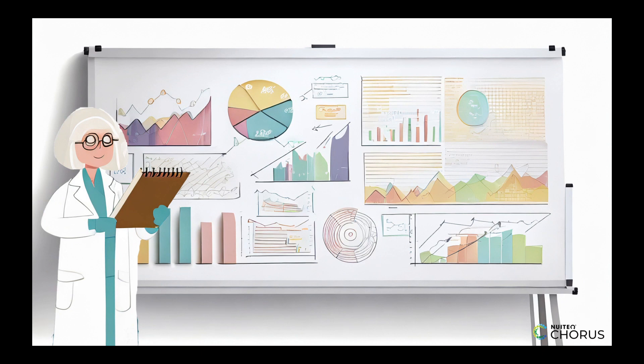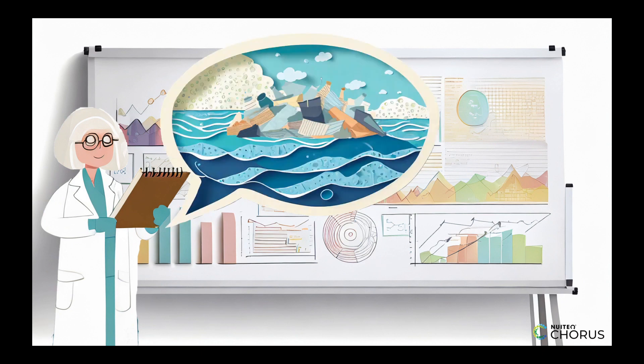They can also make recommendations for how to protect ecosystems from harm. For example, if they find that pollution is harming fish populations in the pond, they might recommend reducing the amount of pollutants that are released into the water.